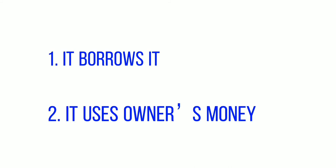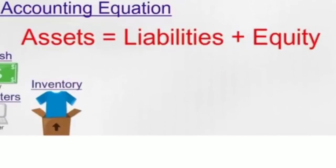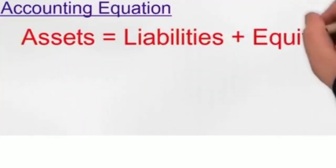That leads to what we call the accounting equation. The accounting equation states that the assets of the company must equal the liabilities plus the equity of the company.